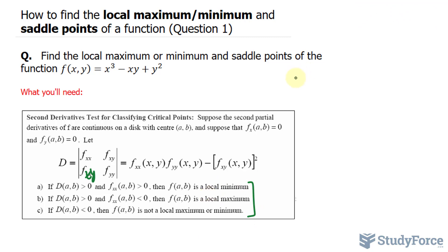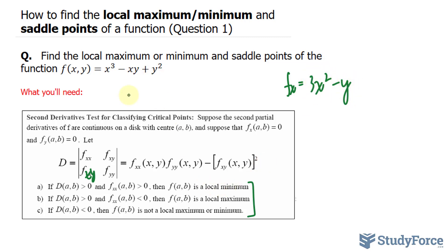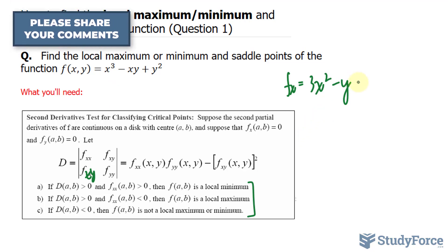Let's go ahead and do that. We have the partial derivative with respect to x. For this equation, it's 3x² minus y. We hold the y terms constant — that's why this becomes 0 — and taking the derivative of x gives 1. We'll set this equal to 0 to find the critical points.